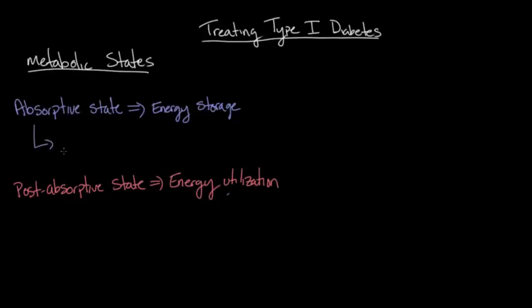Now, this absorptive state here is driven by the hormone insulin, whereas the post-absorptive state is driven by the hormone glucagon. Throughout the day, the human body will typically fluctuate back and forth between this absorptive state and this post-absorptive state.